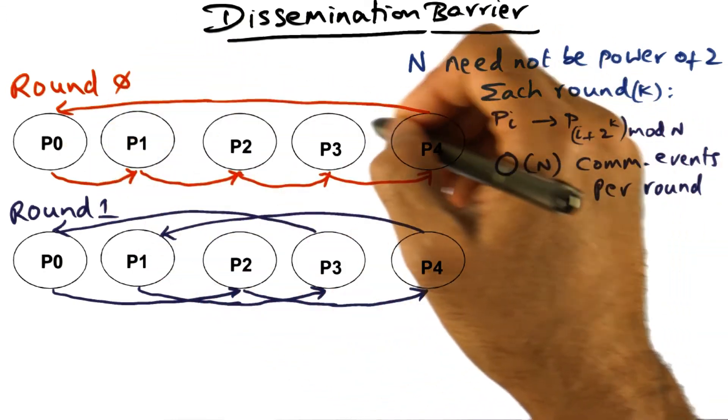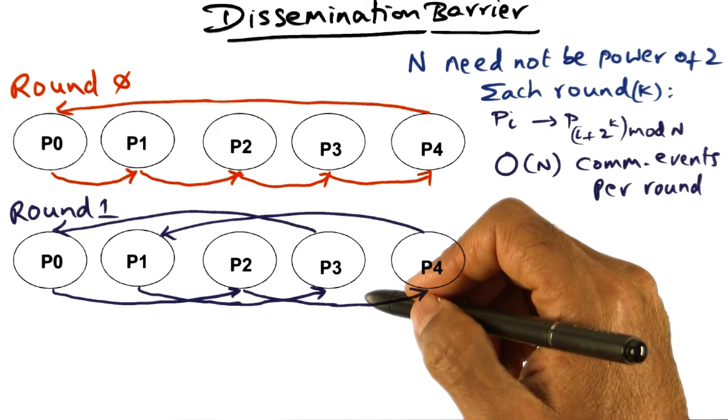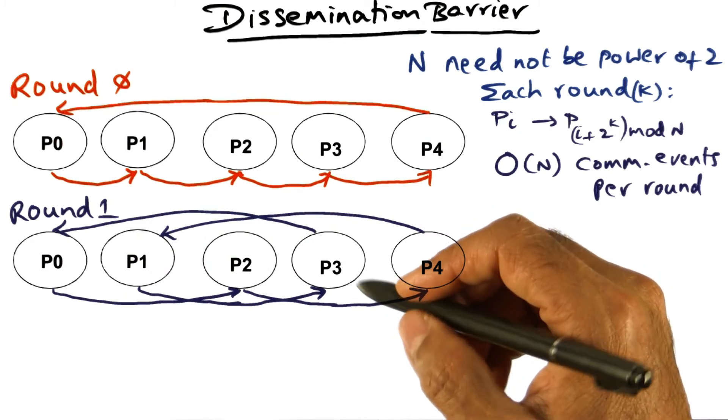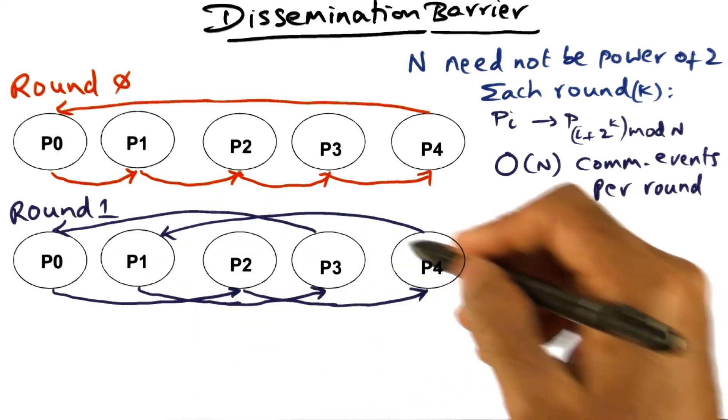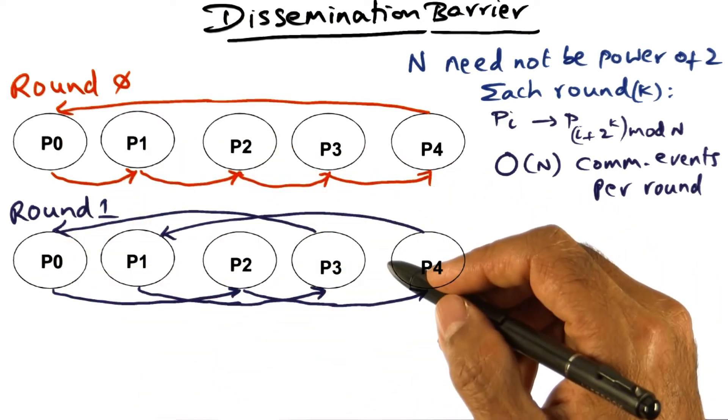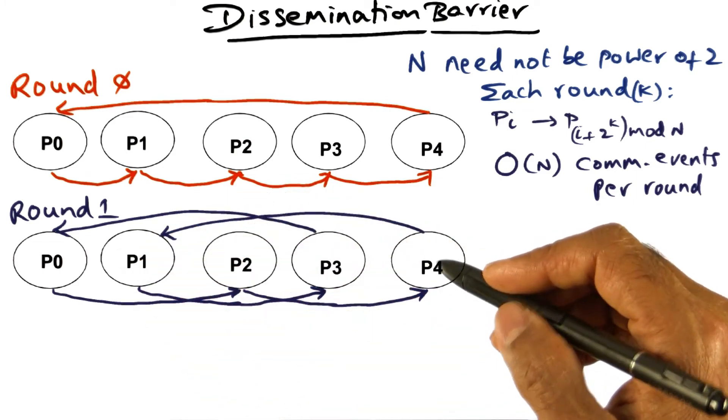And just as I mentioned in the previous round, all of these communications happen in parallel. So if the interconnection network has redundant parallel paths, these parallel paths can be exploited by the dissemination barrier in order to do this communication very effectively.